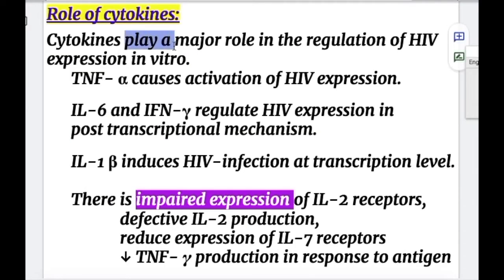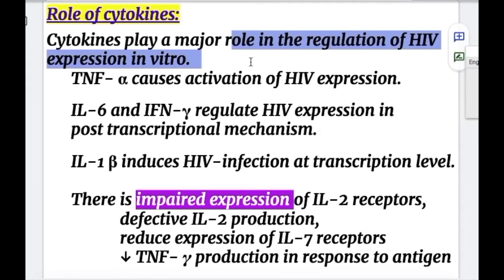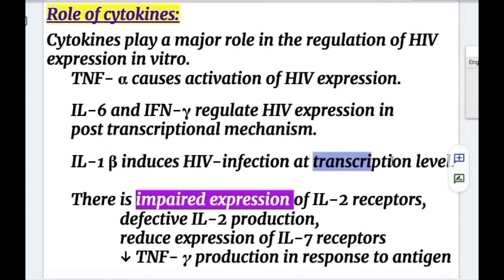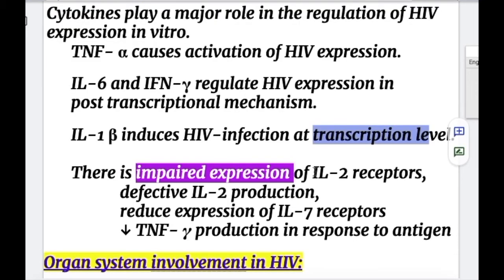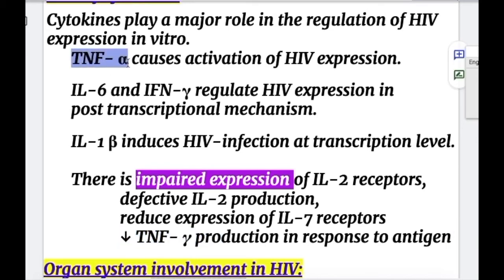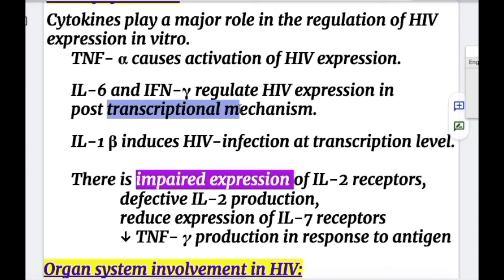Cytokines play a major role in regulating HIV expression in vitro. TNF-alpha causes activation of HIV expression, whereas interleukin-6 and interferon-gamma regulate HIV expression via a post-transcriptional mechanism. Interleukin-1-beta induces HIV infection at the transcriptional level. Impaired expression of interleukin-2 receptors reduces expression of interleukin-7 receptors and decreases TNF-gamma production in response to antigen.